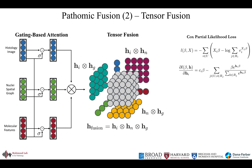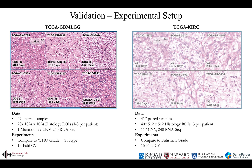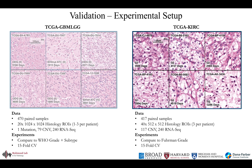To supervise our networks, we use the Cox partial likelihood loss for survival analysis. We evaluate Pathomic Fusion on two cancers: glioma and clear cell renal cell carcinoma. For both datasets, we train with 400 to 500 paired samples of histology ROIs and genomic features in a 15-fold cross-validation and compare with existing gold standards. In glioma, we compare with the current WHO grading system and cell typing system. In clear cell renal cell carcinoma, unlike glioma, this cancer does not have multiple molecular cell types or well-defined heterogeneity, making it a harder problem for precision medicine. Regardless, we validate this method with the Furman grading system.